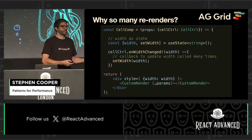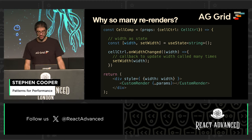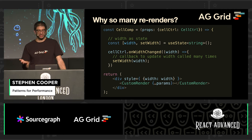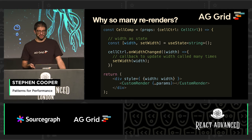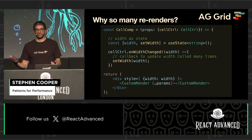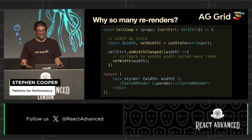So why is it rendering so much? In the initial implementation, the cell component had a state for the width. It was listening to a callback from our controller, saying whenever the width changed — so when it's being dragged — it would call setWidth and set the state, and then React would re-render. It's the standard kind of pattern of state re-render.